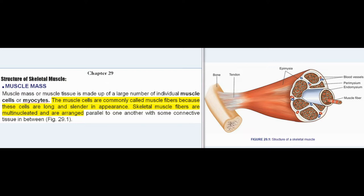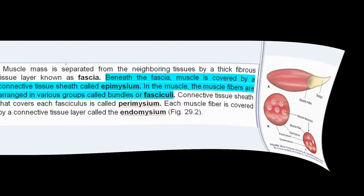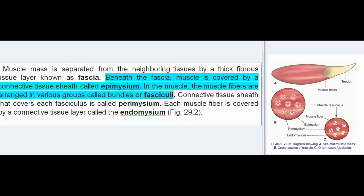Skeletal muscle fibers are multinucleated and are arranged parallel to one another with some connective tissue in between. Muscle mass is separated from neighboring tissues by a thick fibrous tissue layer known as fascia. Beneath the fascia, muscle is covered by a connective tissue sheath called epimysium. In the muscle, the muscle fibers are arranged in various groups called bundles or fasciculi. Connective tissue sheath that covers each fasciculus is called perimysium. Each muscle fiber is covered by a connective tissue layer called the endomysium, Fig 29.2.